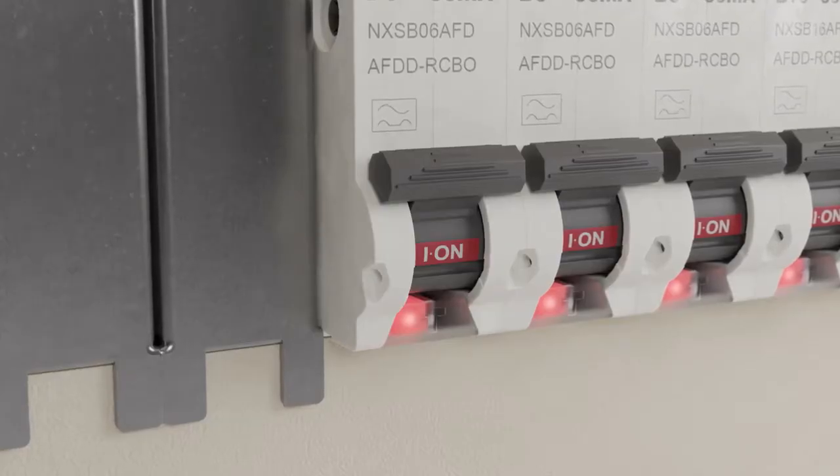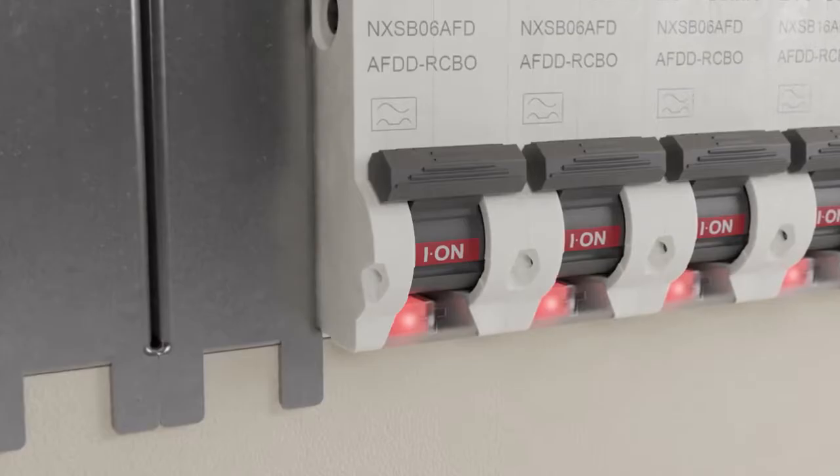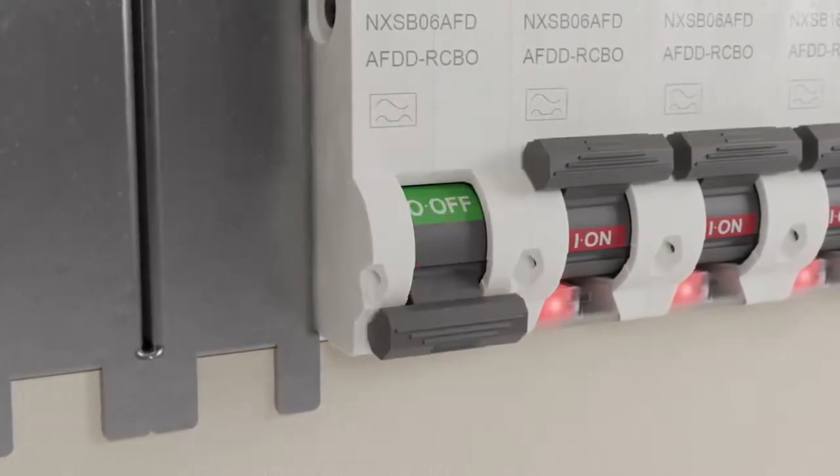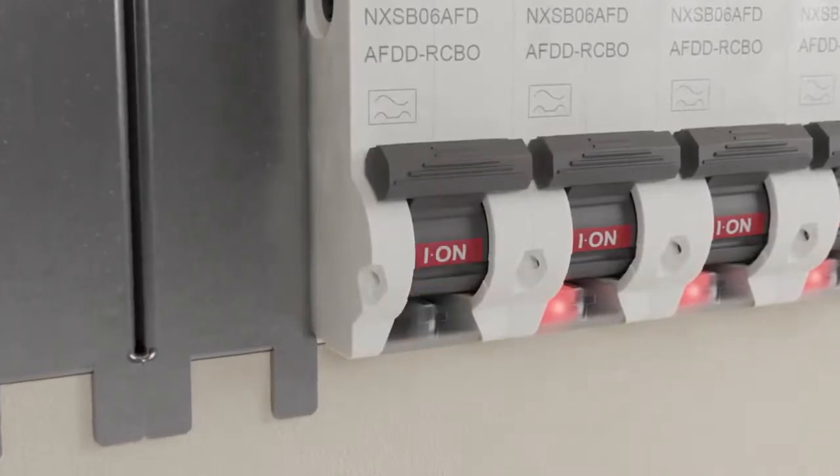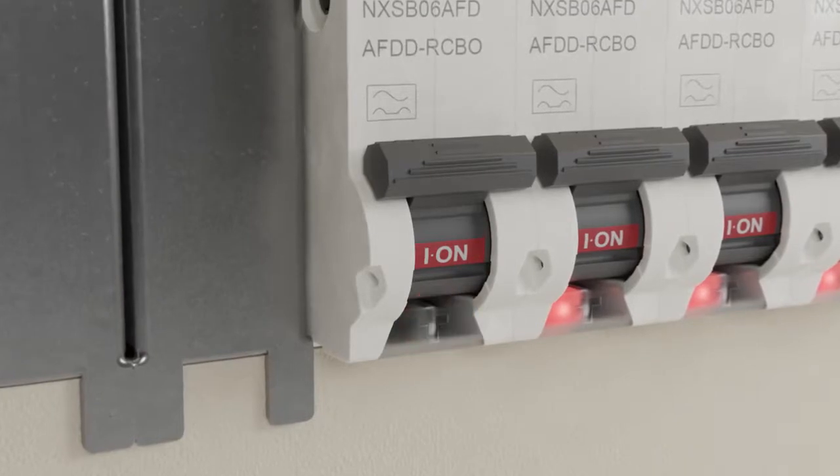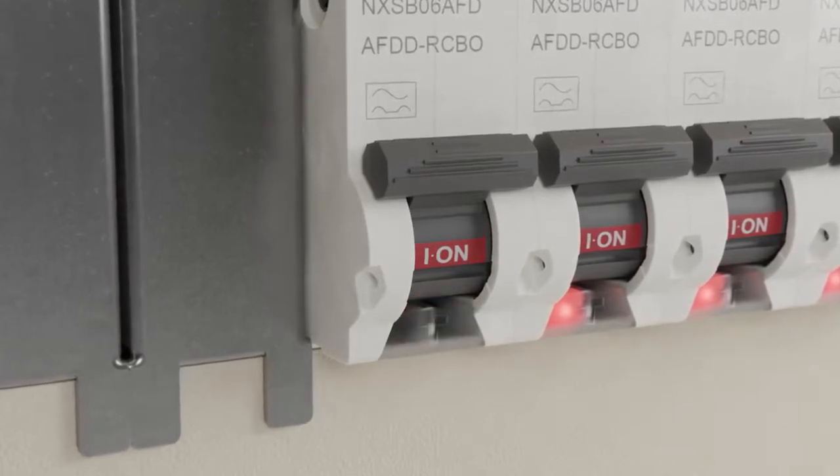When an arc fault occurs, the AFDD will simultaneously activate the trip mechanism and fully isolate the circuit in question. When the AFDD is re-energised, a yellow indicator will flash identifying the type of fault. The device can be reset once the fault has been cleared.